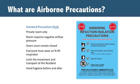Airborne precautions are used in addition to standard precautions when a resident is infected with mycobacterium tuberculosis, the germ that causes TB, and chickenpox or shingles in residents with disseminated disease or localized disease in an immune-compromised resident. All of these diseases are spread by the airborne route and require standard precautions plus additional airborne precautions.